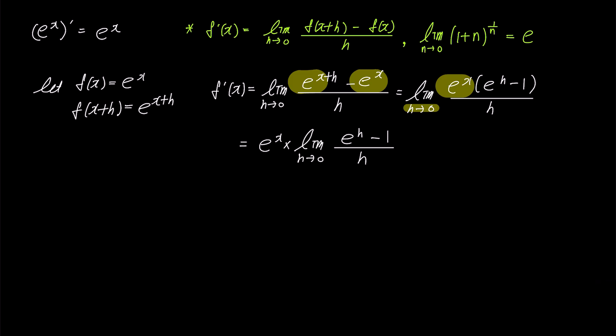Now, if we find the value of the expression inside the orange box, we can determine the derivative of e to the power of x. To find the limit value, let's substitute e to the power of h minus 1 with n. As h approaches 0, n also approaches 0.